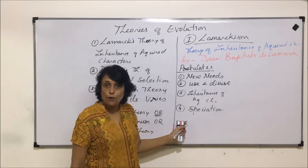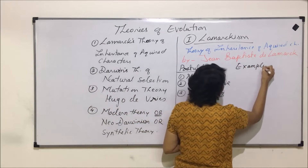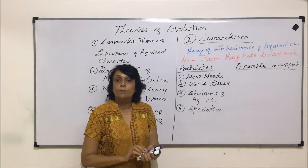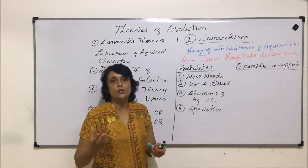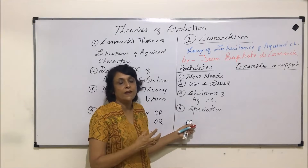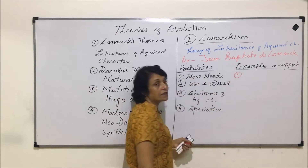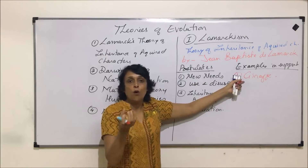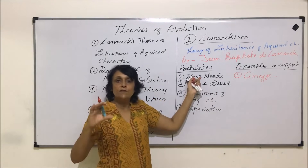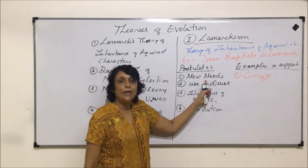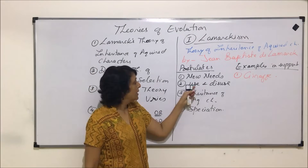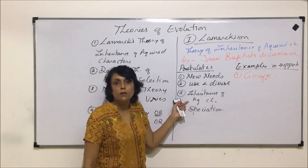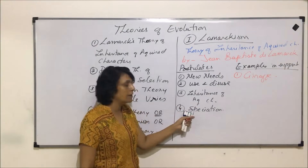There are certain examples in support of this theory. The giraffe example: giraffe originated from a horse-like organism; the new need was that only tall trees had available leaves; they used their forelimbs and neck, which became longer and longer. That longer limb and neck character was inherited, and a new species of giraffe was formed.